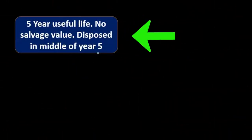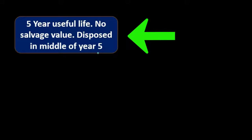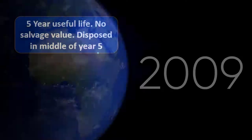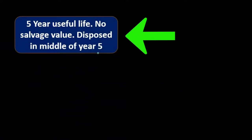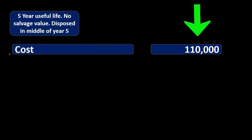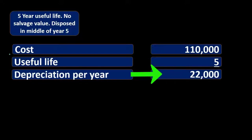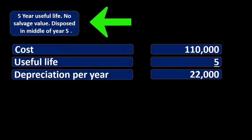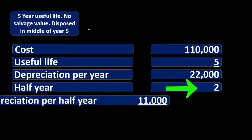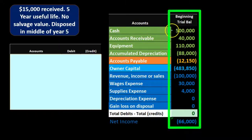Whenever we have a situation where the adjusting process only occurs at the end of the month or year, and we sell or dispose of something in the middle of that period, we need to account for the unrecorded depreciation up to that point. In this case, depreciation was recorded as of the end of last year, and six months have passed. The calculation: cost of $110,000 divided by the useful life of five years gives depreciation per year of $22,000. We need a half year, so we divide by two to get $11,000 — the depreciation for that half year.